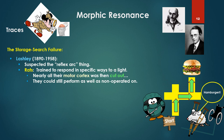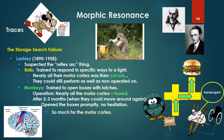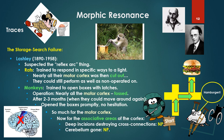Lashley suspected the whole reflex arc thing. For rats, he trained them to respond in specific ways to a light. Nearly all of their motor cortex was then cut out, but still they could perform as well as those not operated on. Monkeys trained to open boxes with latches — then nearly all of the motor cortex was again removed. After two to three months, they could move around again and opened the boxes promptly, with no hesitation. So much for the motor cortex. Now for the associative areas of the cortex, deep incisions destroying cross-connections — no problem. Cerebellum gone, totally — no problem.